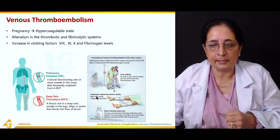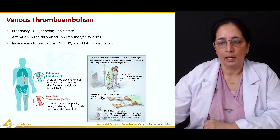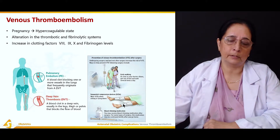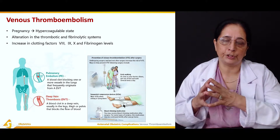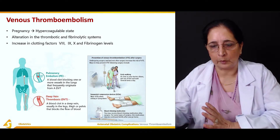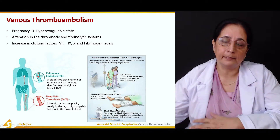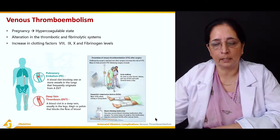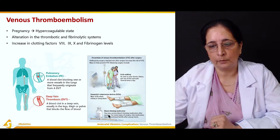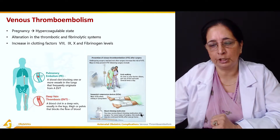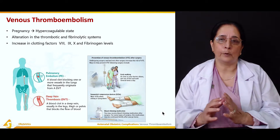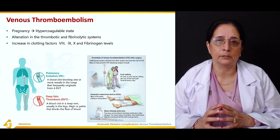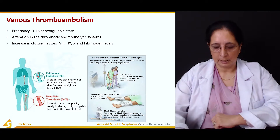Sequential compression devices are also helpful; they apply pressure and prevent thromboembolism. Blood thinner drugs are important to decrease the chances of forming a thrombus, and patients may receive blood-thinning medication after surgery. All these are important steps to reduce the incidence of thromboembolism after surgery.